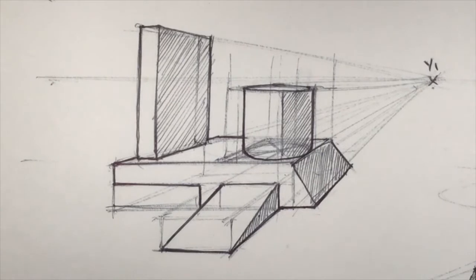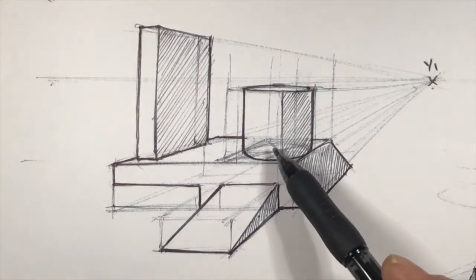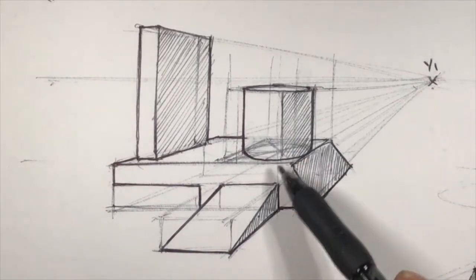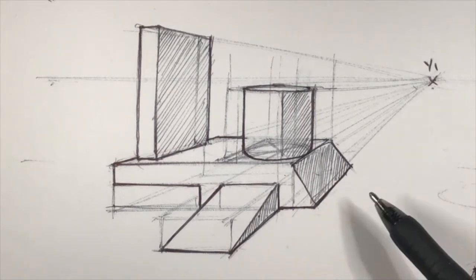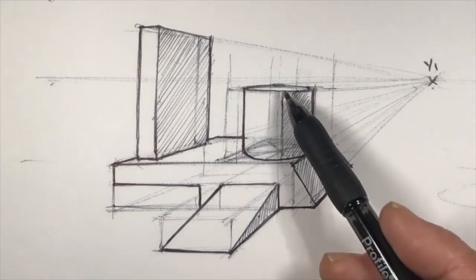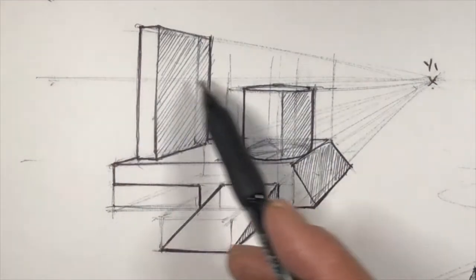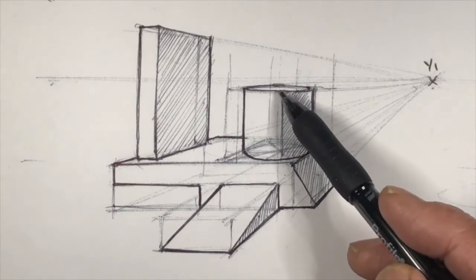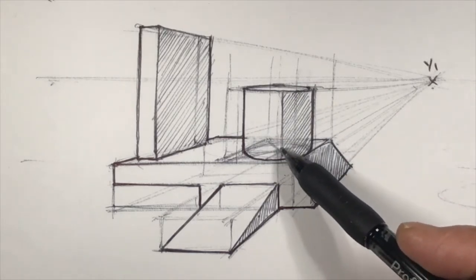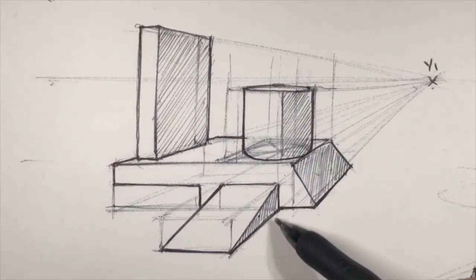You can see here that the squares will determine how open or closed each of these ellipses would be on the minor axis. Our understanding is that an ellipse closer to our eye level, which is the horizon line, will appear flatter and will open up the further it is below our eye level.